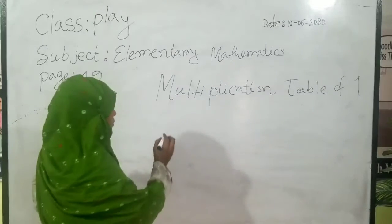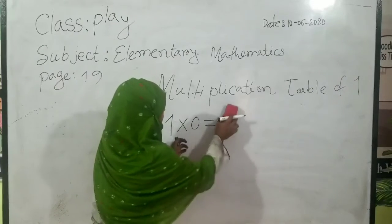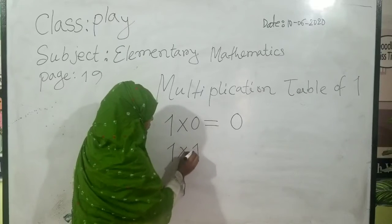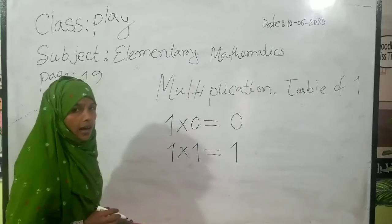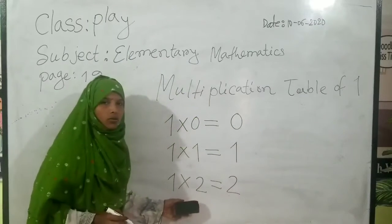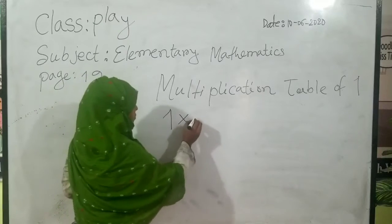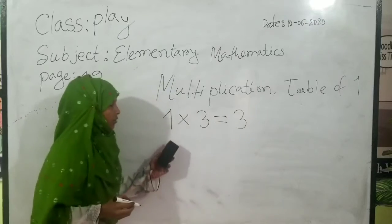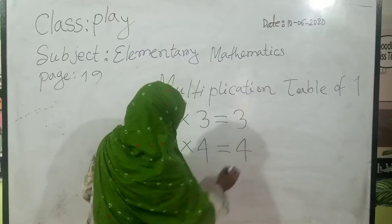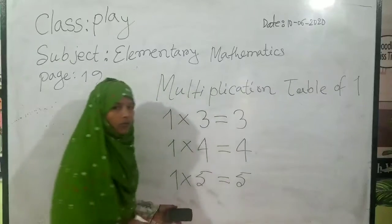Everybody look forward. 1 zero's are 0. Next. 1 one's are 1. 1 two's are 2. 1 three's are 3. 1 four's are 4. 1 five's are 5.